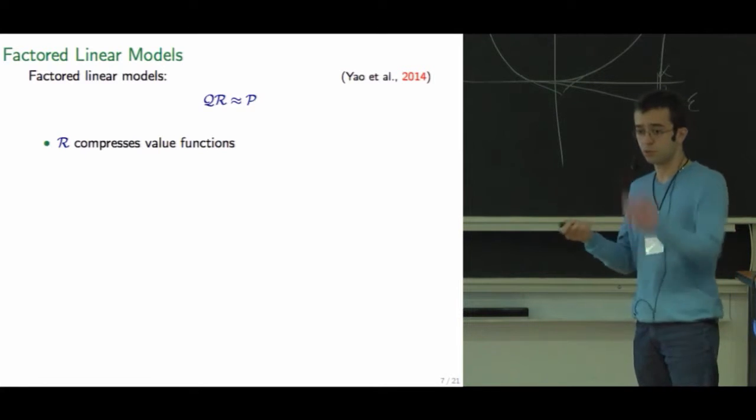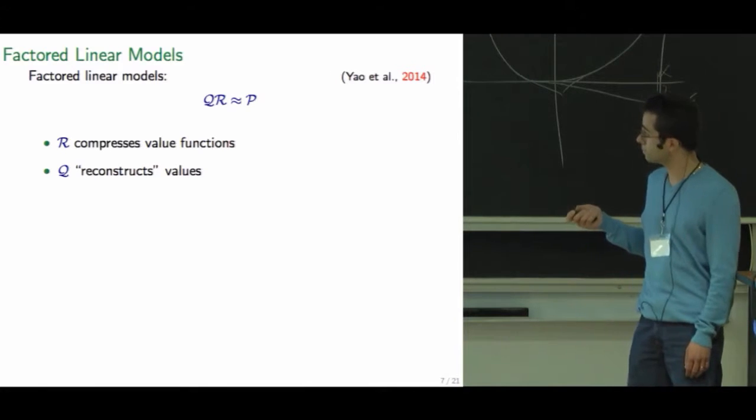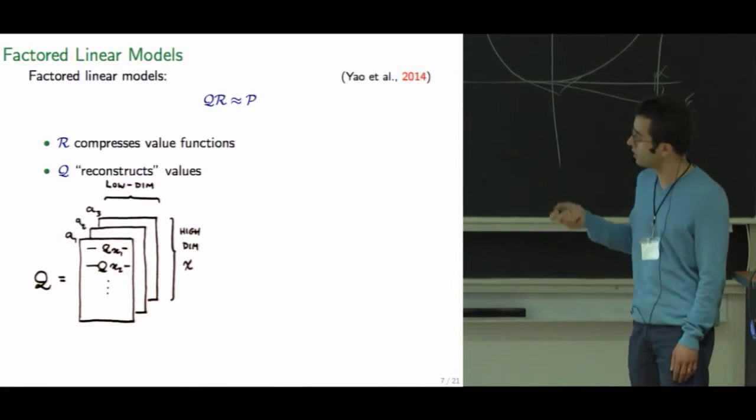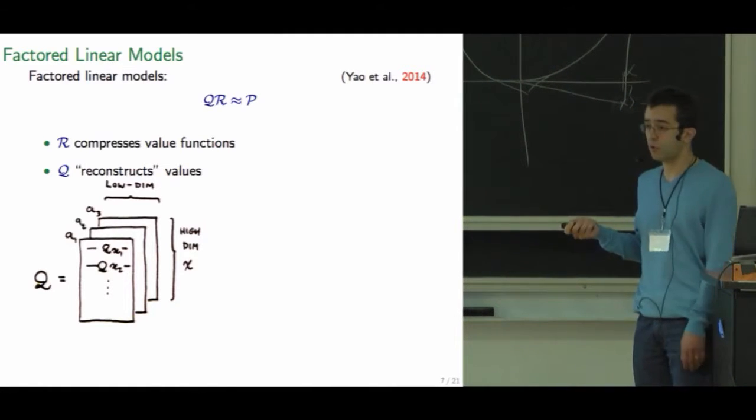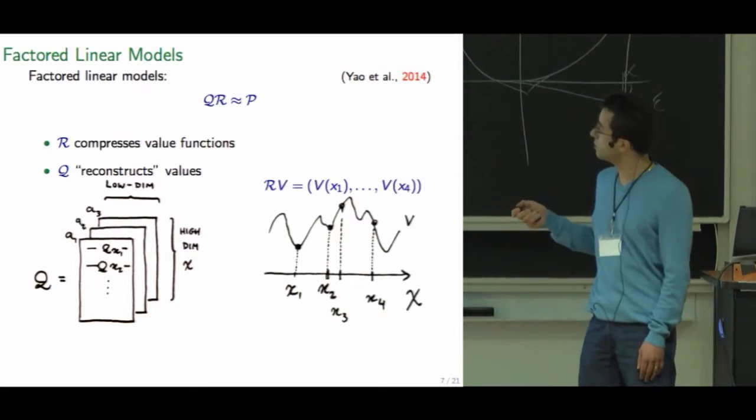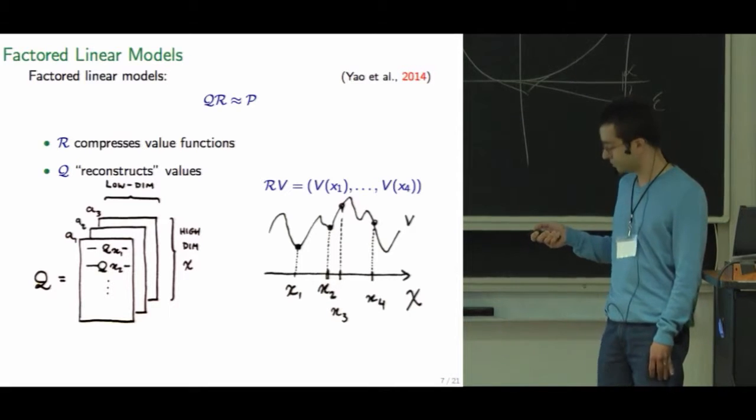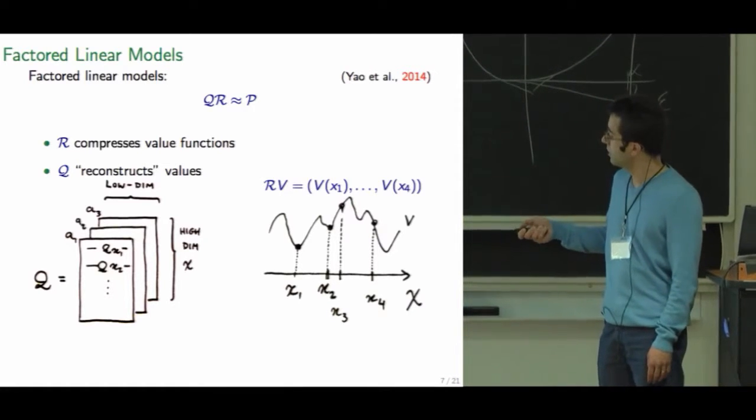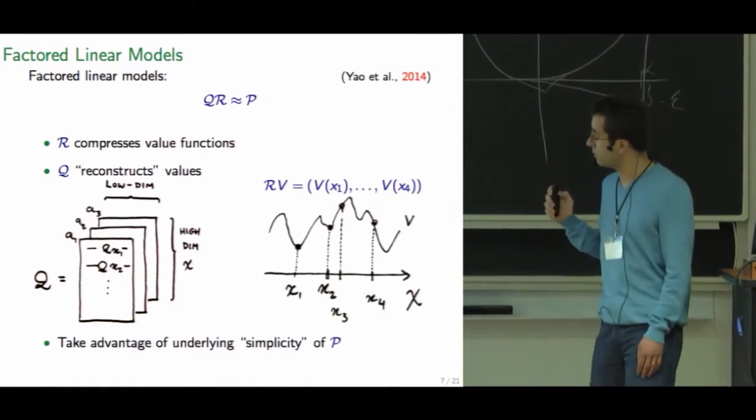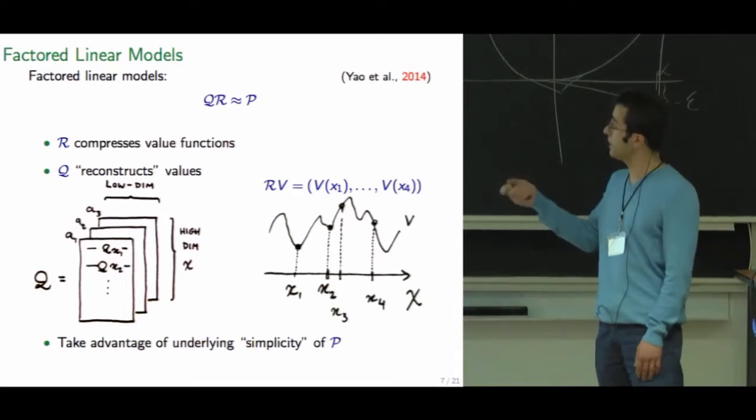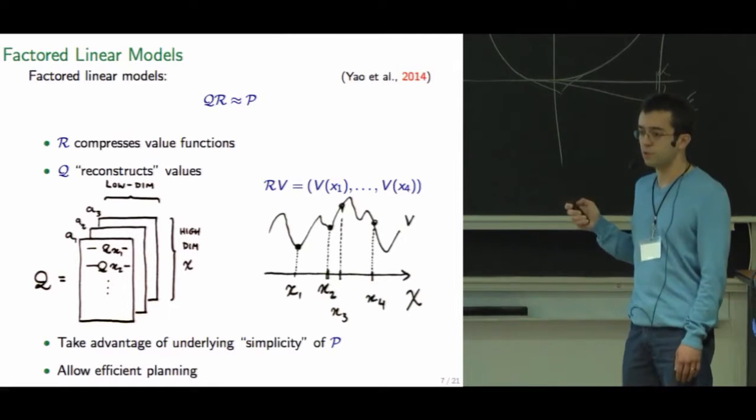What we're going to do is just approximate P with this factored linear model. R will compress the value functions into some low dimensional space and Q will reconstruct these values. The form for Q is that it will be this tall and thin matrix. One choice we work with for R is to simply subsample this long vector value function at some predetermined set of states. The idea is to take advantage of some underlying simplicity of P in this factored representation, but we also want to allow efficient planning.